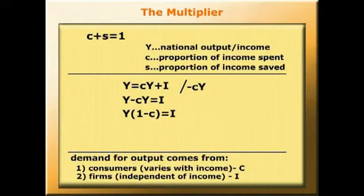If that step isn't obvious, look at the term Y times 1 minus c and multiply the brackets out. Y times 1 is Y, and Y times c is little c times Y.